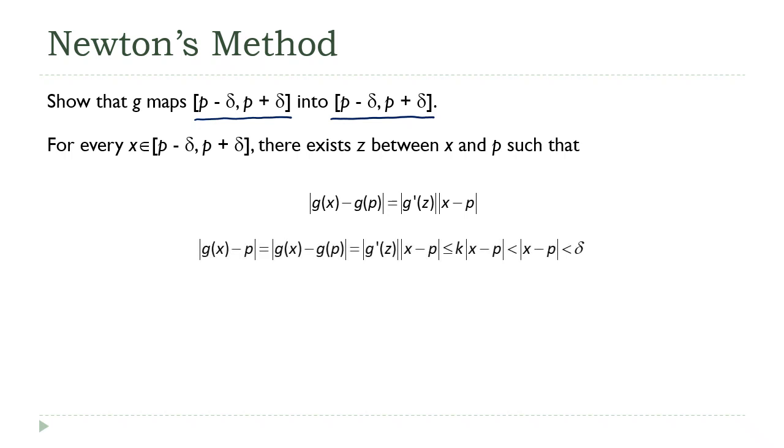Now, let's walk through this. There's a lot going on here. g(x) minus p is equal to g(x) minus g(p). P is the fixed point of the g function. So p and g(p) are the same.